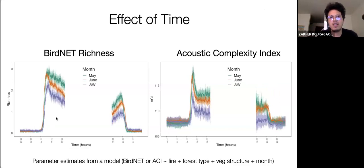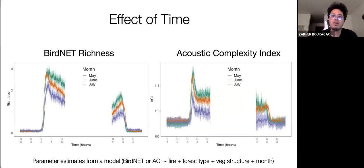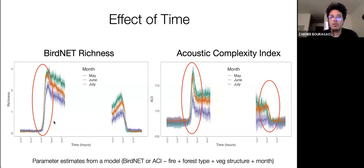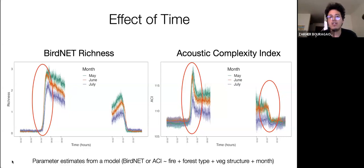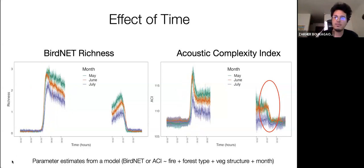Both bird richness and the ACI showed mostly similar patterns in May, June, and July; both metrics reached their highest values in May. Bird richness shows two distinct peaks at dawn and dusk. One interesting observation is that both metrics showed a shift in their onset during dawn, where it starts earlier in June compared to May and July, and another shift in the dusk where the peak of activity ends later in June compared to May and July. In July, during the evening, the acoustic complexity is significantly lower compared to June and May.